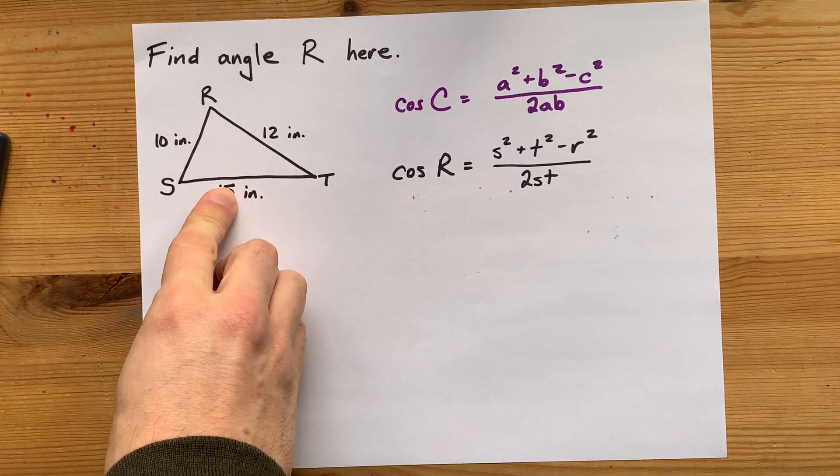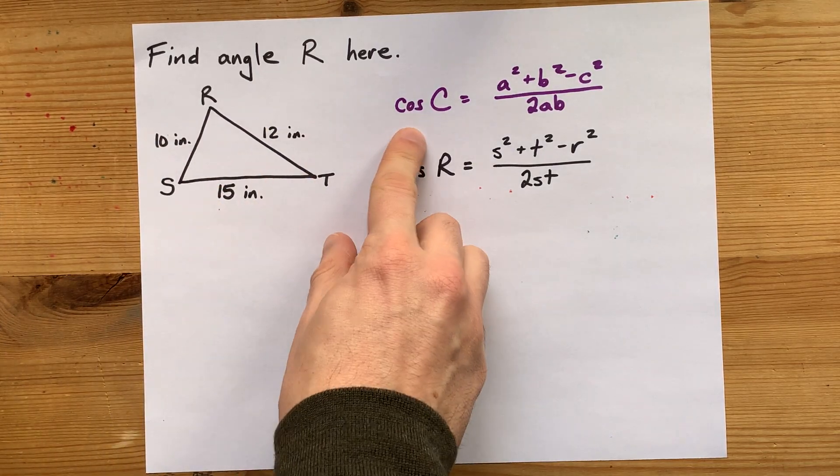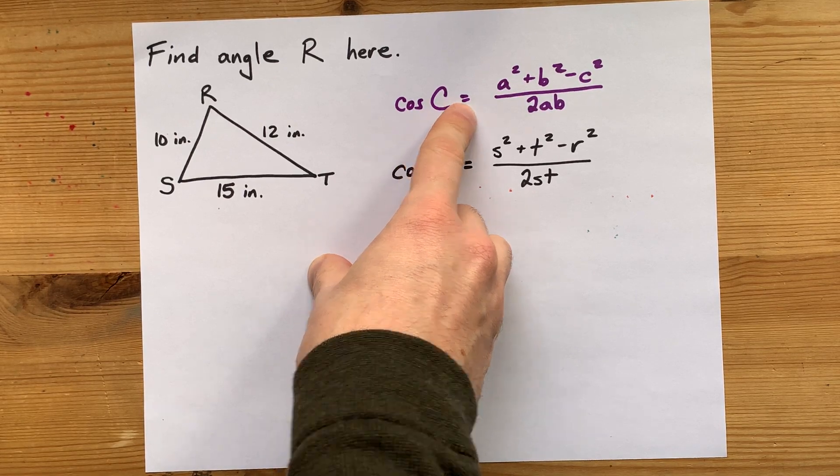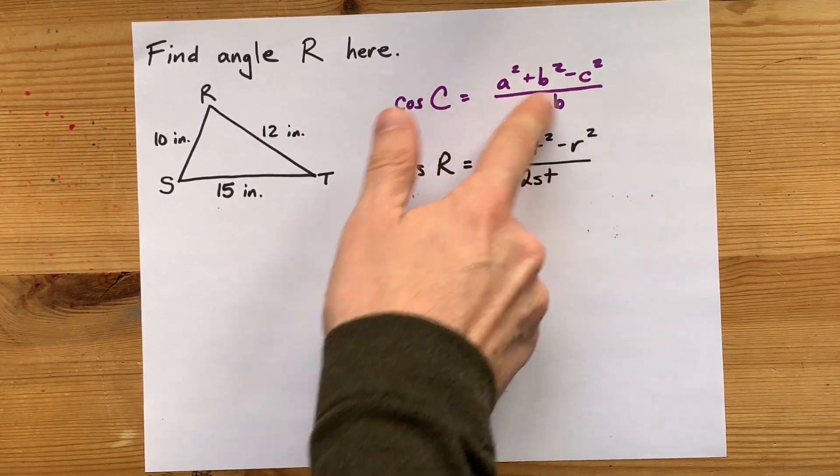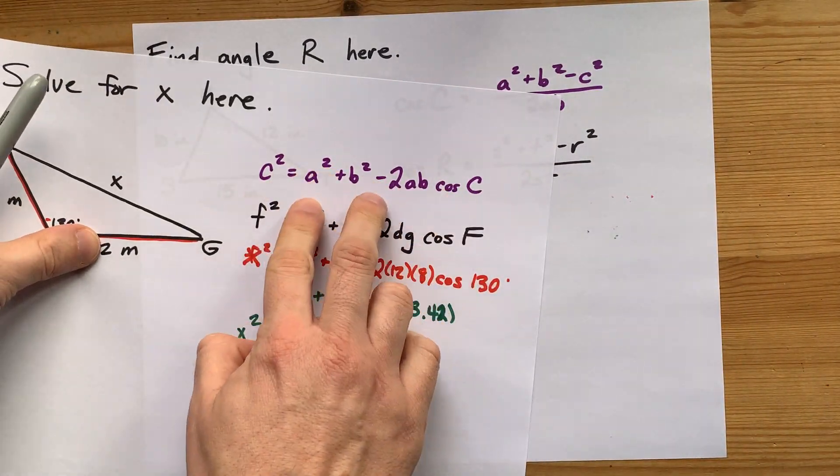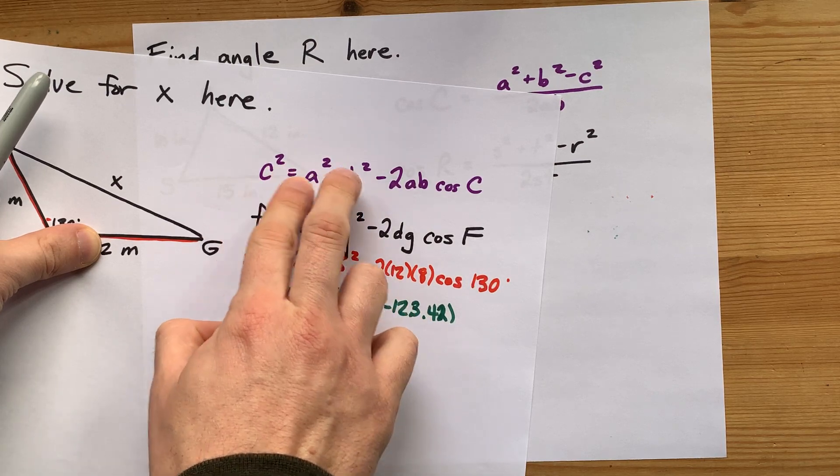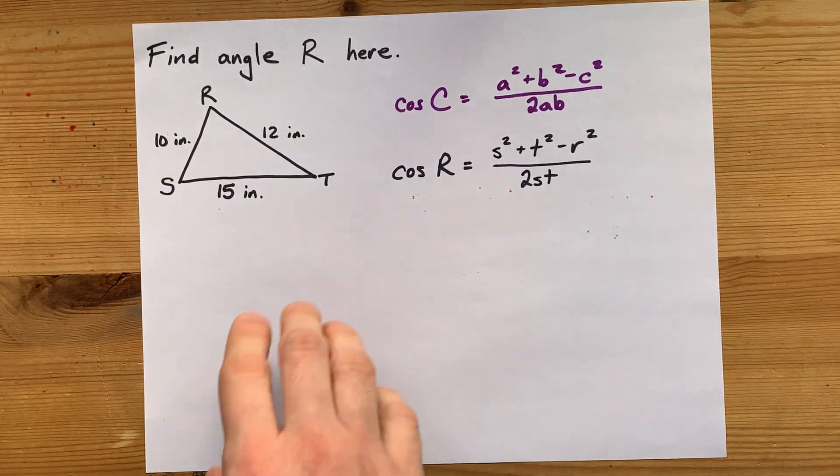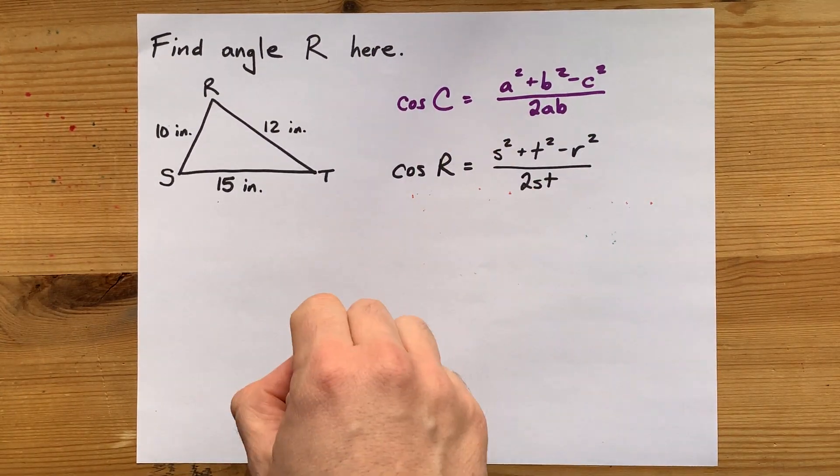We have 10 and 12 and 15. The formula your teacher might give you is cos of angle C equals a squared plus b squared minus c squared all over 2ab. That's a rearranged version of this where you move those to the other side and subtract them. Then you divide by negative 2ab and you do some work to cancel the negatives.